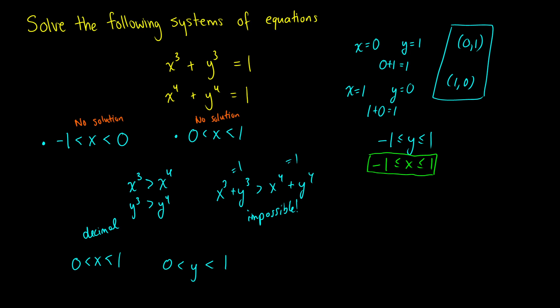Therefore, we have now covered the whole range of values that x could be if there were other possible solutions. So what we found from this is that these are the only solutions that are available, (0,1) and (1,0).